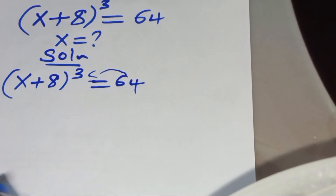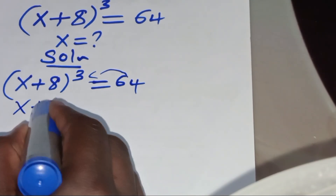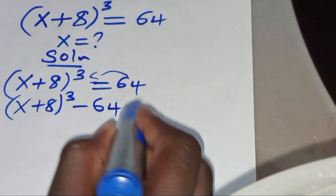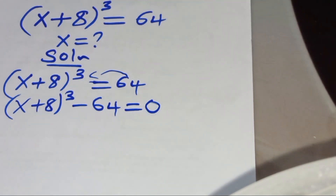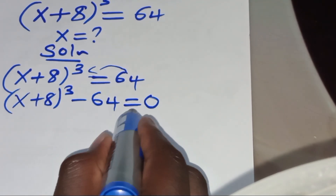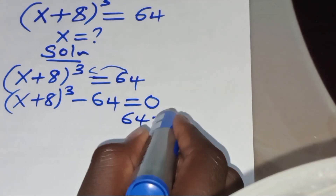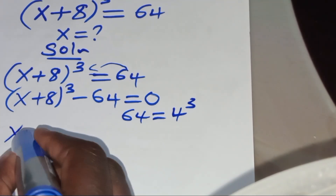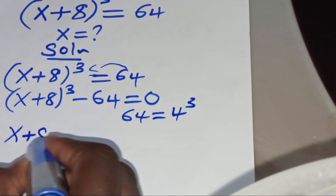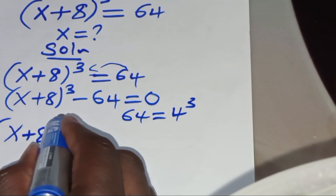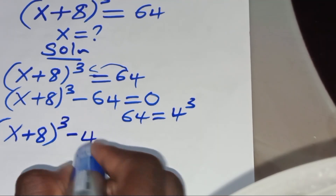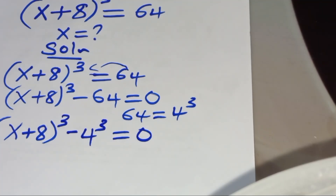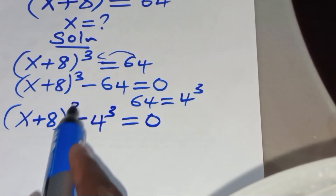We'll have (x + 8)³ − 64 = 0. We can express 64 as 4³, so we have (x + 8)³ − 4³ = 0.